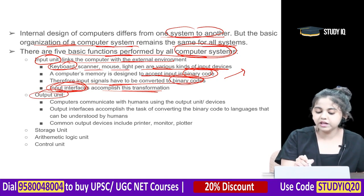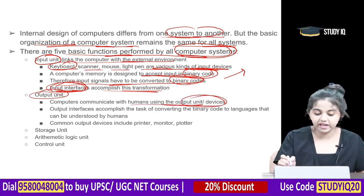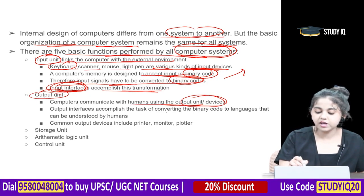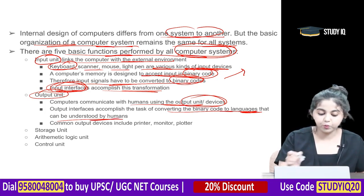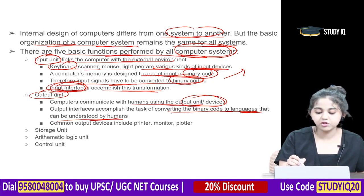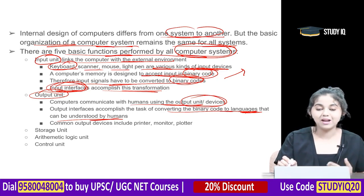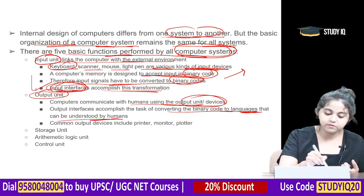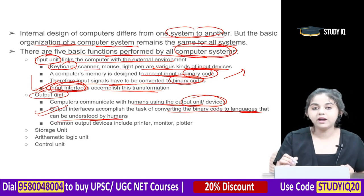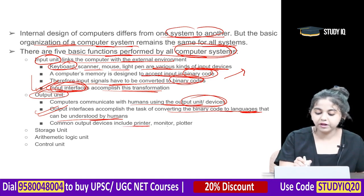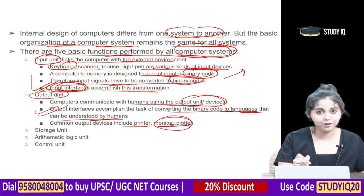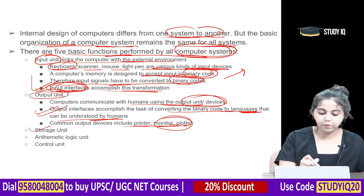The output unit communicates the results to humans using output devices. Output interfaces accomplish the task of converting binary code into language that can be understood by humans. Common output devices include printer, monitor, and plotter.